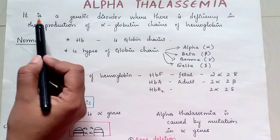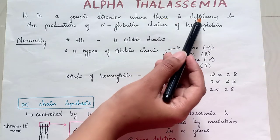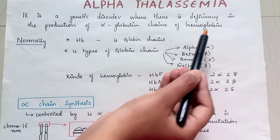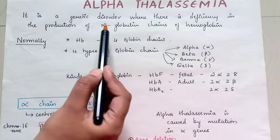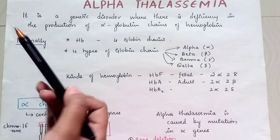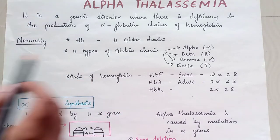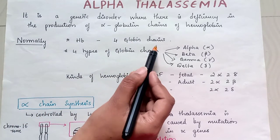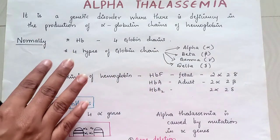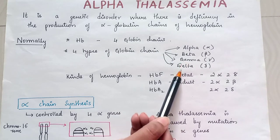Alpha thalassemia is a genetic disorder where there is deficiency in the production of alpha globin chains of hemoglobin. In hemoglobin, there are usually chains called alpha and beta. So in alpha thalassemia, alpha globin chains are deficient. Hemoglobin has 4 globin chains: alpha, beta, gamma, and delta.